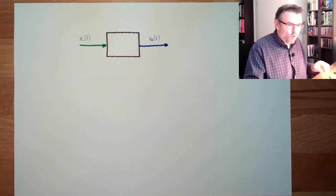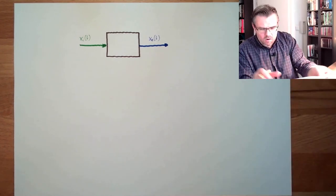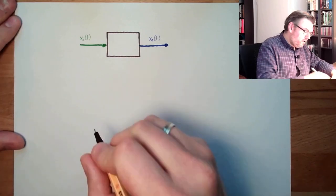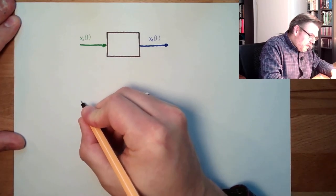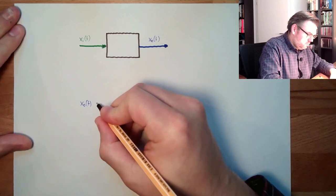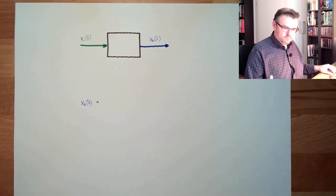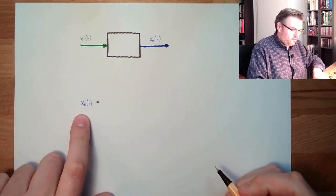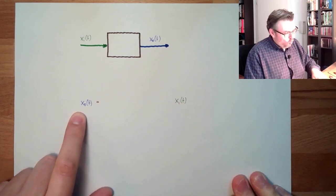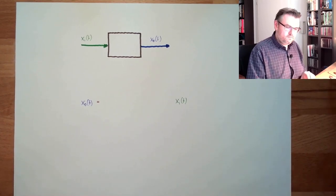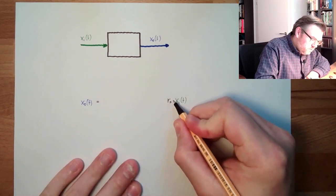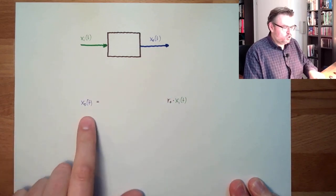We want to know how the output might be influenced by the input. A very simple thing would be xo equals xi. We could even scale it — so we write r0, some factor multiplied by xi, shall be xo.